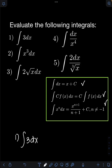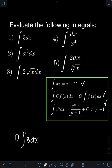For the first formula, the integral of dx is simply equal to x plus c. The integral of c·f(x)dx, where c is a constant, is just equal to c times the integral of f(x)dx. And the integral of x raised to n dx is equal to x raised to n plus 1 over n plus 1, plus c, provided that n is not equal to negative 1.